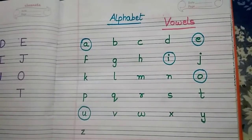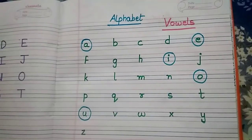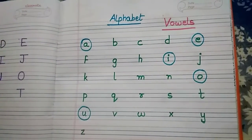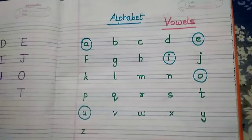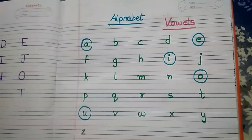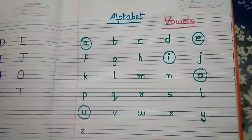So let me tell you, how many vowels are there? There are 5 vowels. What are they? I repeat: a, e, i, o, u. There are 5 vowels and the rest of the letters are consonants.